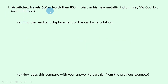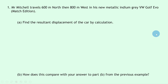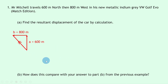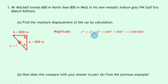Now for the calculation method using the same example — Mr. Mitchell travels 600 meters north then 800 meters west. This time we find resultant displacement by calculation using Pythagoras and trigonometry (SOH-CAH-TOA). Start with a sketch: vector A is 600 meters north, vector B is 800 meters west, the resultant is side C (the hypotenuse), with a right angle and angle theta at the starting point. Using Pythagoras: c² = a² + b² = 600² + 800² = 1,000,000, so c = 1000 meters.